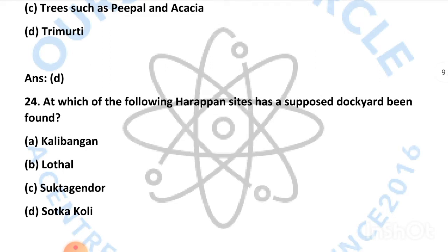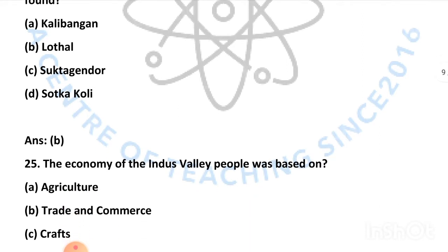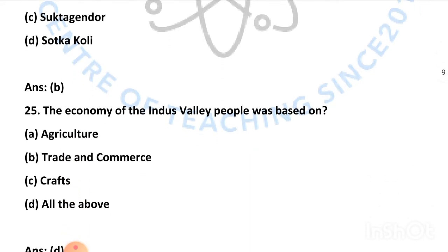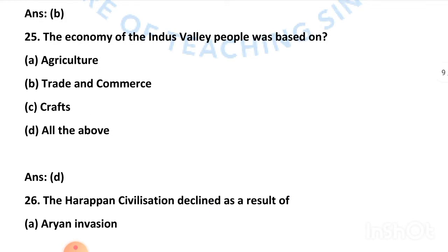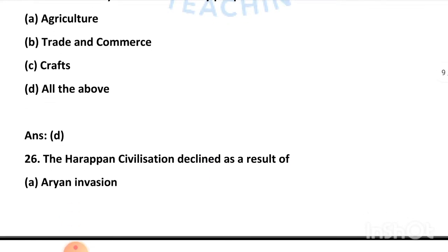Our next question is: which of the following Harappan sites has a supposed dockyard been found? — and the right answer is Lothal. Our next question is: the economy of the Indus Valley people was based on — and the right answer is all of the above, meaning agriculture, trade and commerce, and crafts.